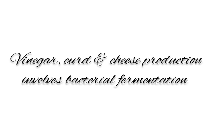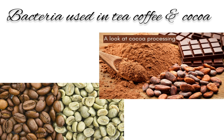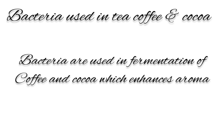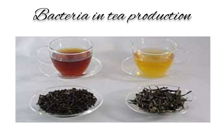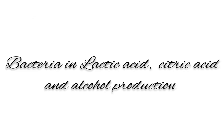In the food industry, manufacturing of vinegar, curd, and cheese involves bacterial fermentation. Bacteria are also used in the production of tea, coffee, and cocoa. Coffee and cocoa are derived from beans that are fermented, dried, roasted, and then powdered. Fermentation by bacteria helps in increasing the aroma of coffee and cocoa. Bacteria also help in the ripening of tea leaves, after which the aroma and flavor of tea increases. Lactic acid, citric acid, and alcohol are also obtained by the action of bacteria.